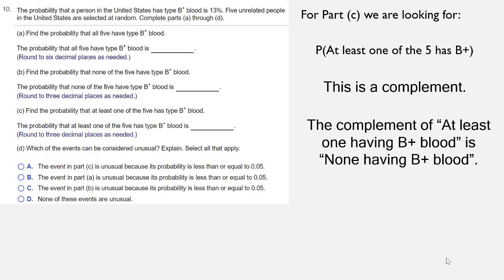So at least one having B positive blood is the complement of none having B positive blood. And we've already computed the probability that none have B positive blood. We did that in part B.